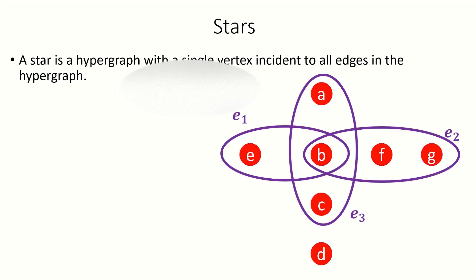Here's an example of a star, with vertex B being contained by every edge in the hypergraph. Notice that all stars are intersecting families, since if there's a vertex incident to all edges in the hypergraph, all pairwise intersections of edges will contain at least that vertex.